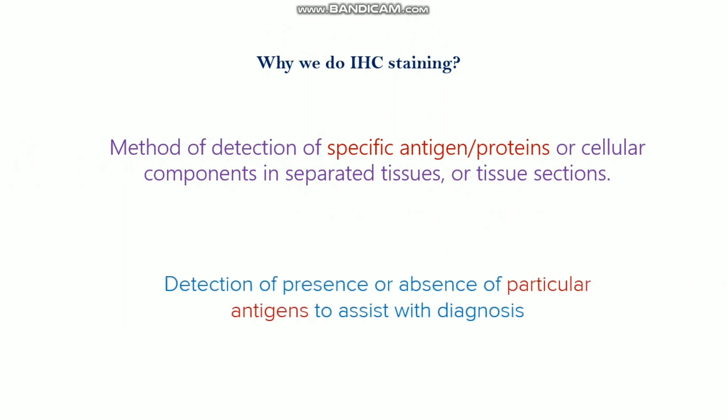IC staining is also used for diagnosis purposes — to detect any kind of specific protein marker in disease. For example, in cancer, if you want to detect a cancer protein marker such as p53 or any other protein marker, you can use IC staining to detect them very easily.